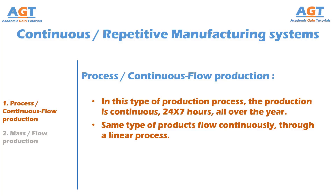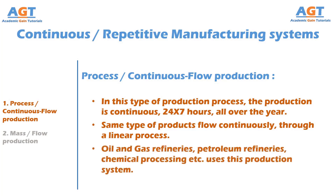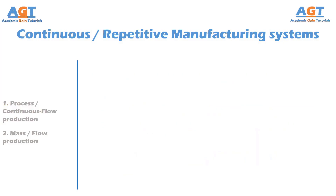The process production system, or continuous flow production system, is used in oil and gas refineries, petroleum refineries, and also in chemical processing, where production is required continuously, day and night, all over the year. Another type of continuous production process is mass production.